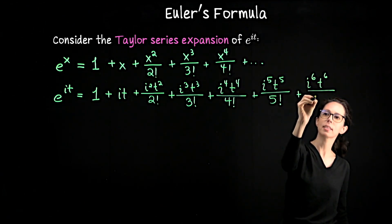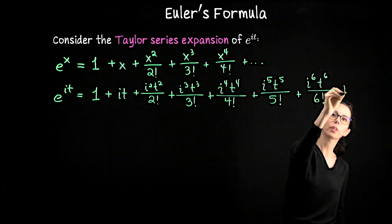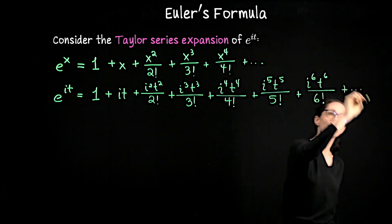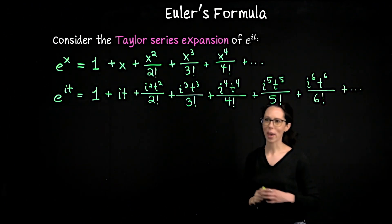We write i to the 6th t to the 6th over 6 factorial, and we would continue in that way.